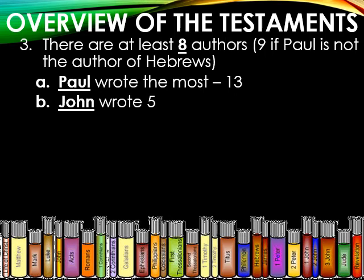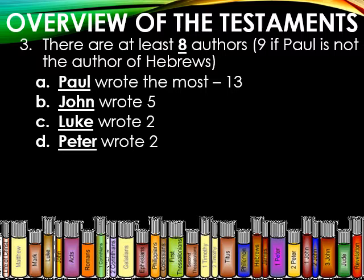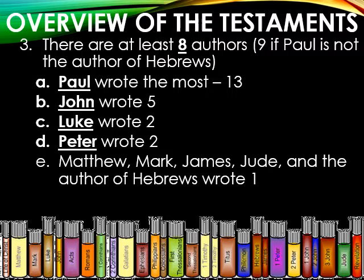Luke wrote two: the Gospel of Luke and the Book of Acts. Peter wrote two: 1st and 2nd Peter. Then Matthew, Mark, James, Jude, and the author of Hebrews each wrote one. James and Jude are interesting — they were actually half-brothers of Jesus. We believe that all of the writers of the New Testament were Jews except for Luke, which is significant because Jesus chose a non-Jew to write an inspired portion of scripture, showing he was counter-cultural to the belief that people groups should only stick together.